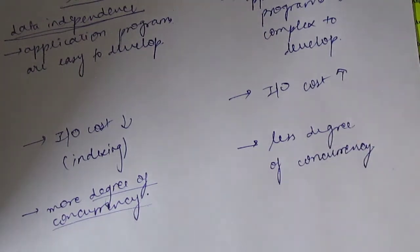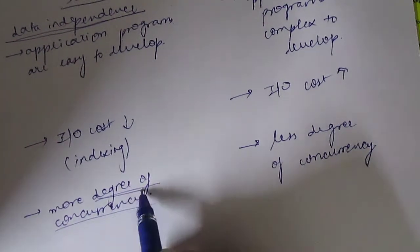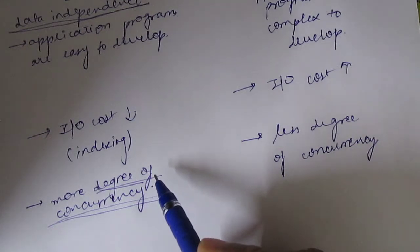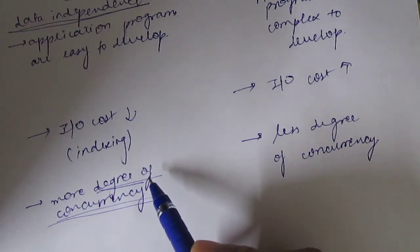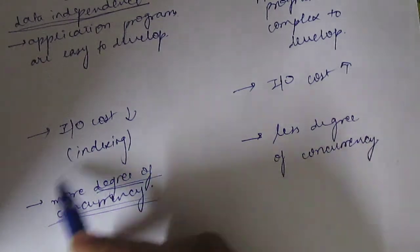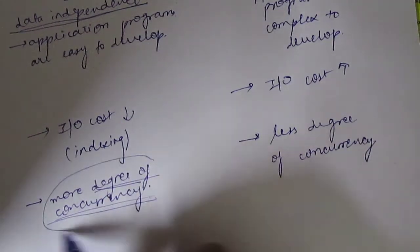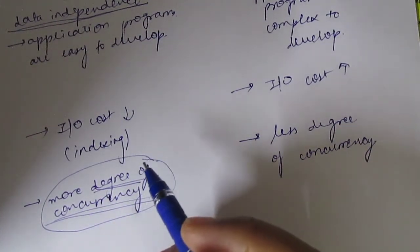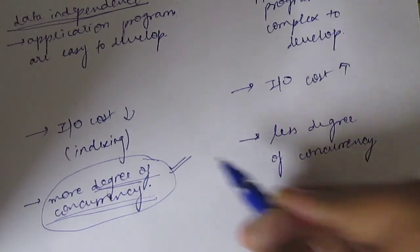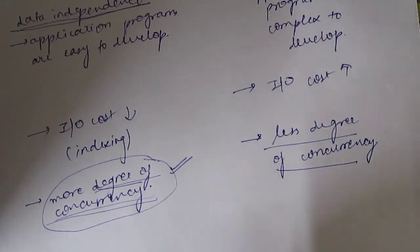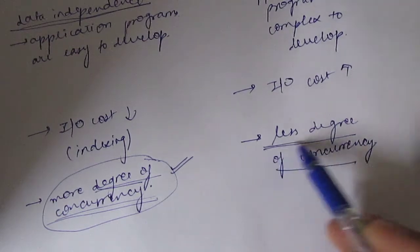The degree of concurrency refers to how many users can access our database simultaneously. In DBMS it is higher because of data independence — we do not have to handle all things manually. These concepts will be covered in transaction management. DBMS also uses a lock mechanism, which is a very advanced feature that does not exist in a file system. In a file system, the user has to maintain everything — there is no hierarchy, no abstraction — so there is less degree of concurrency.